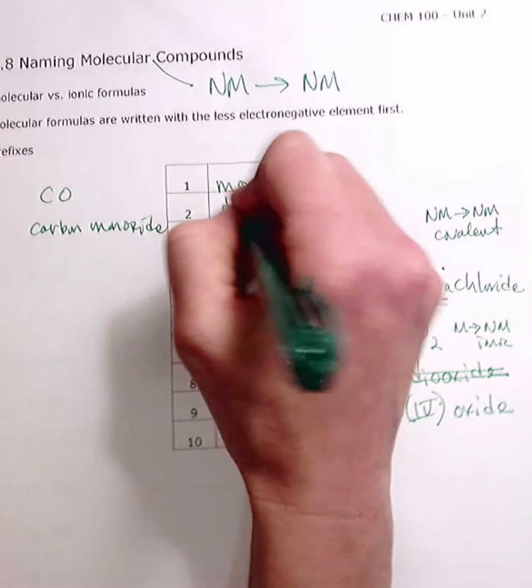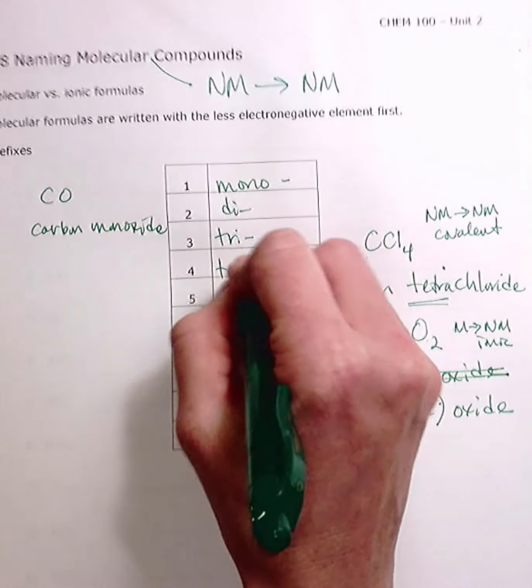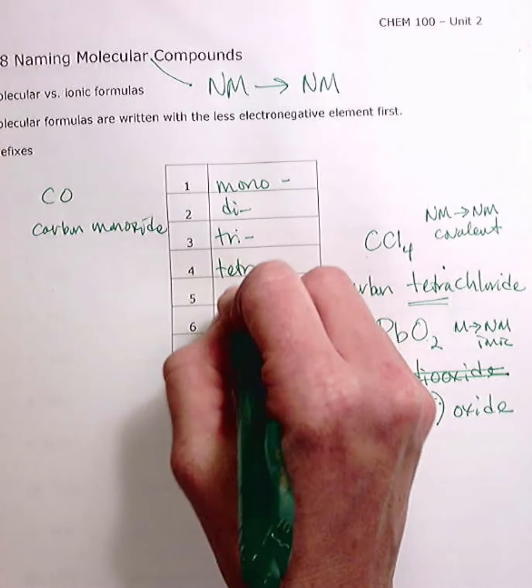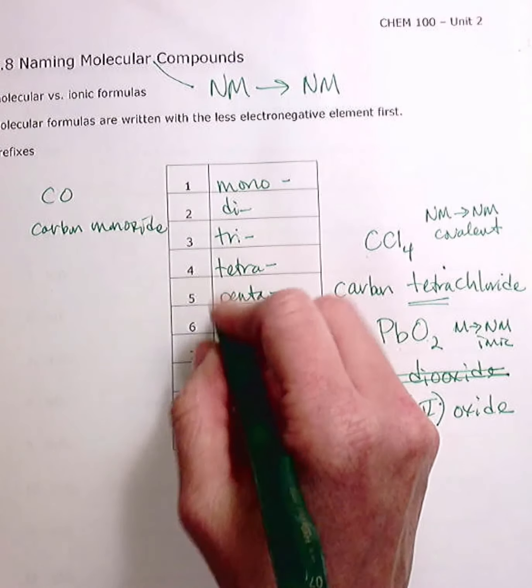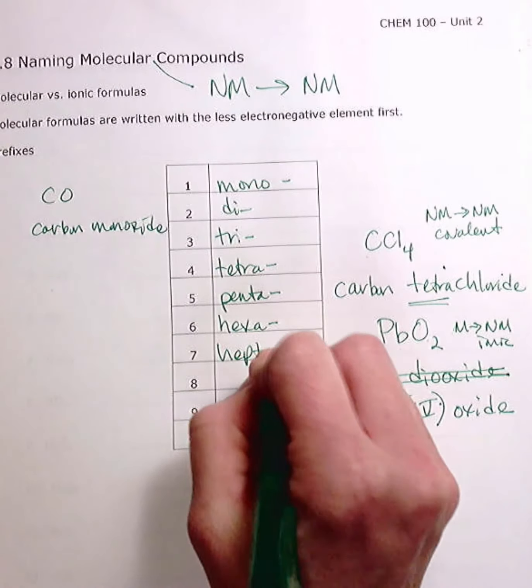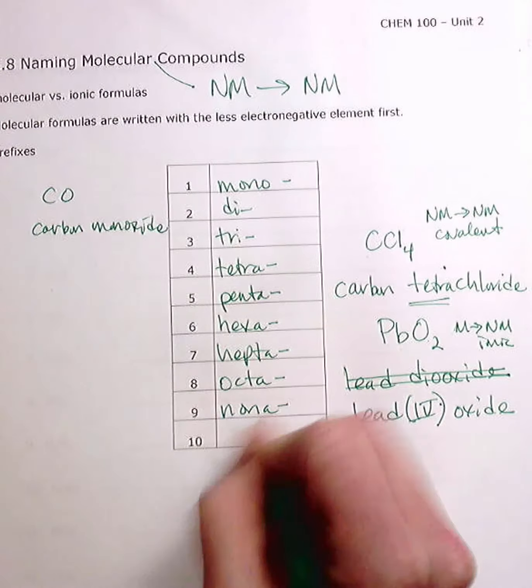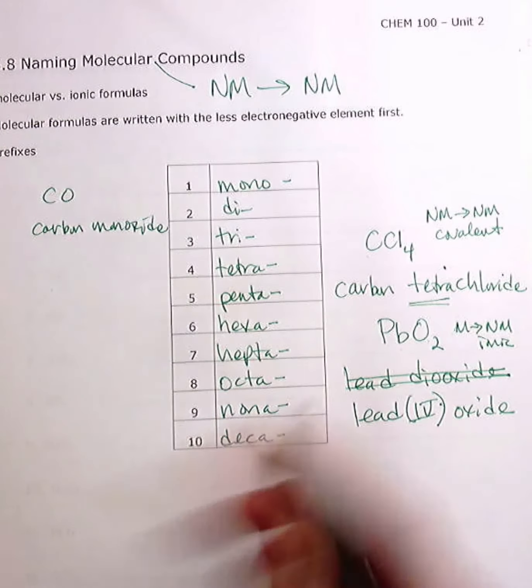All right. Two is di. Three is tri. Four is tetra. Five is penta. Six is hexa. Seven is hepta. Eight is octa. Nine is nona. And ten is deca. OK.